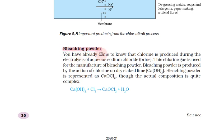Bleaching powder. Chloralkali process. Sodium chloride, sodium hydroxide, chlorine gas, hydrogen gas. Chlorine is produced during electrolysis of aqueous sodium chloride — sodium chloride brine.